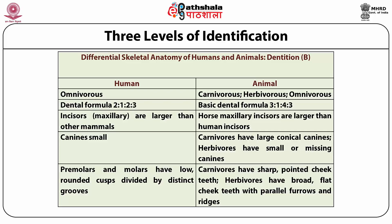The dentition comparison table shows: humans are omnivorous with dental formula 2,1,2,3; animals can be carnivorous, herbivorous, or omnivorous with basic dental formula 3,1,4,3. Human maxillary incisors are larger than those of other mammals, but horse maxillary incisors are larger than human incisors. Human canines are small, whereas carnivores have large conical canines. Human premolars and molars have low rounded cusps; carnivores have sharp pointed cheek teeth; herbivores have broad flat cheek teeth with parallel furrows and ridges.